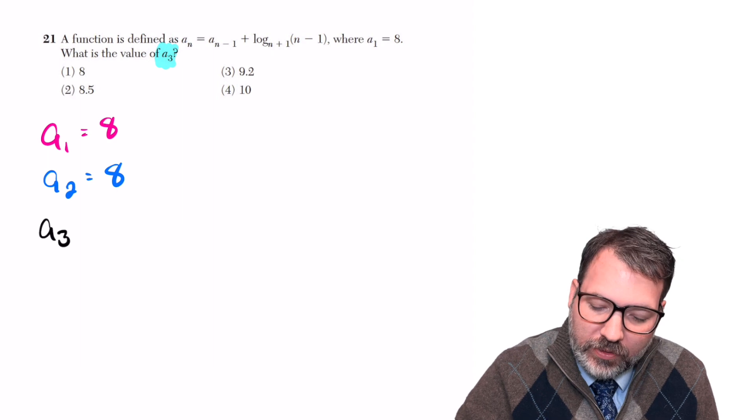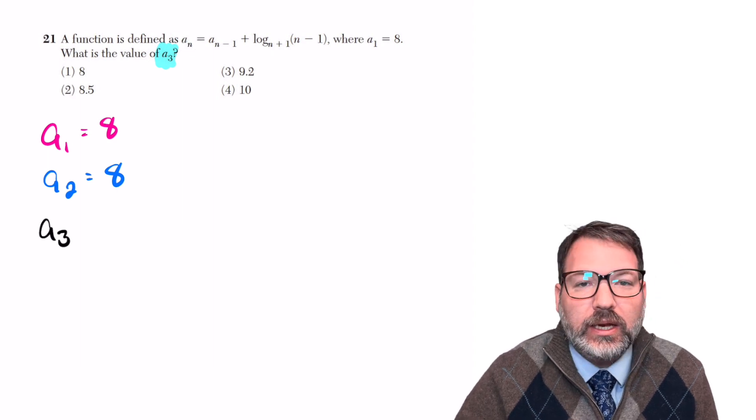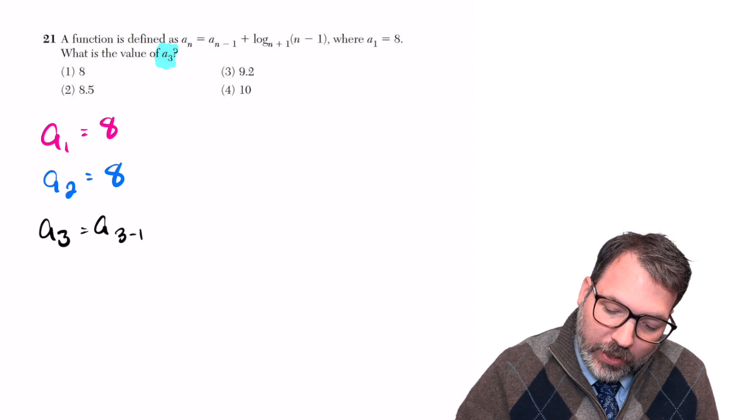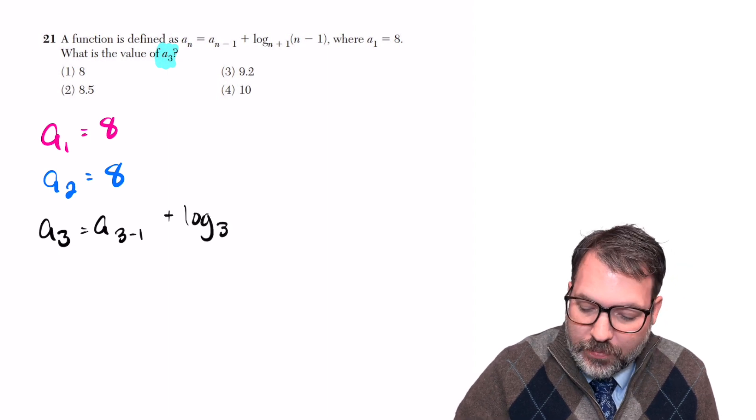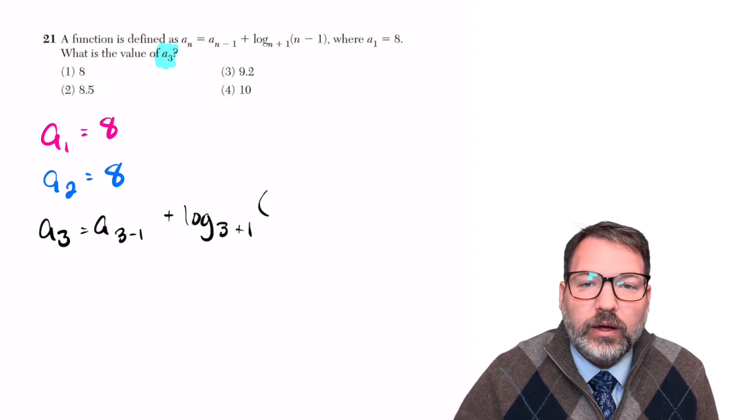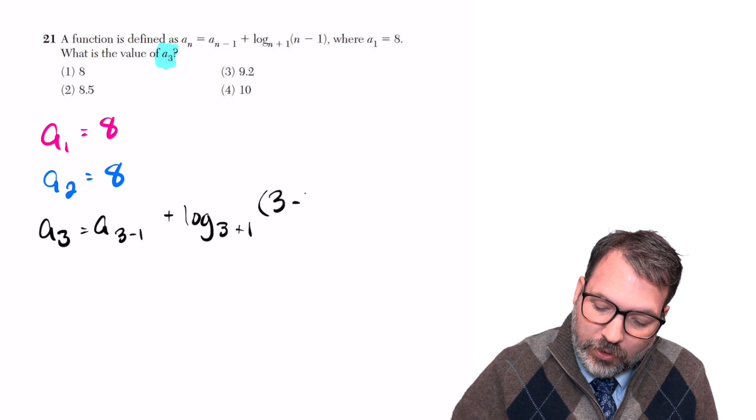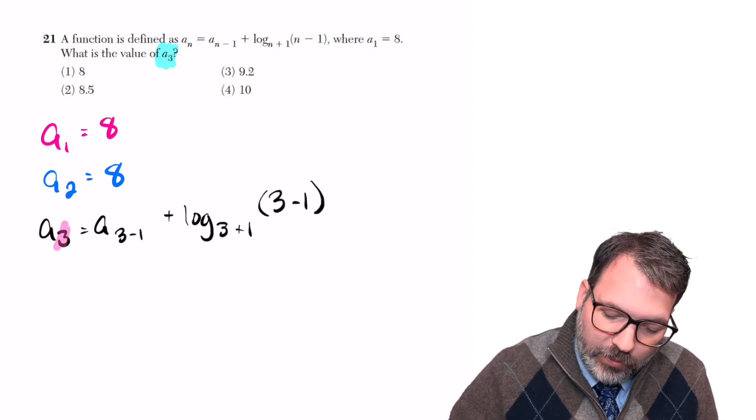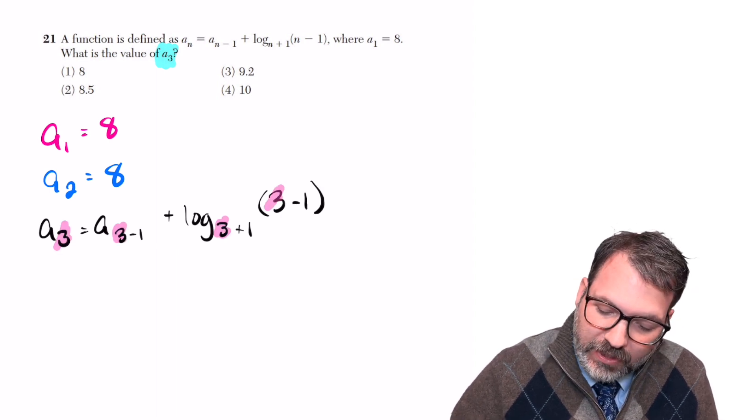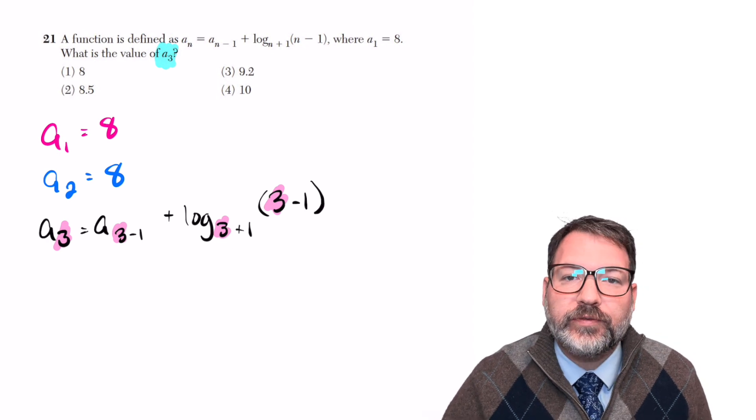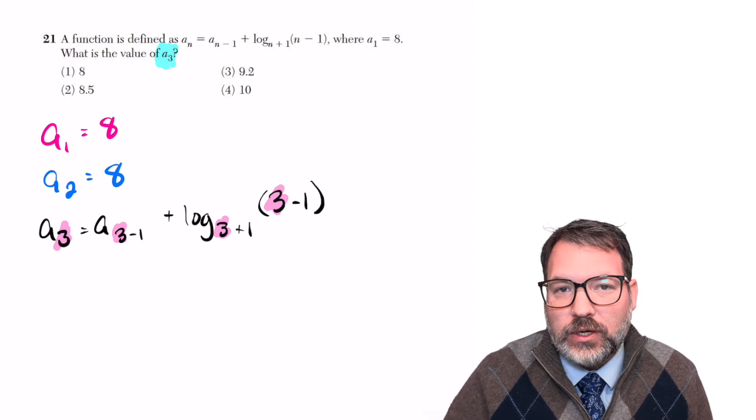a sub 3 this time, this is the one that they're interested in, is equal to a sub 3 minus 1 plus log sub 3 plus 1, n plus 1, of n minus 1 itself, so that's going to be 3 minus 1. And again, what we're doing here is simply replacing n every time with 3 because we're finding the third term in this sequence.